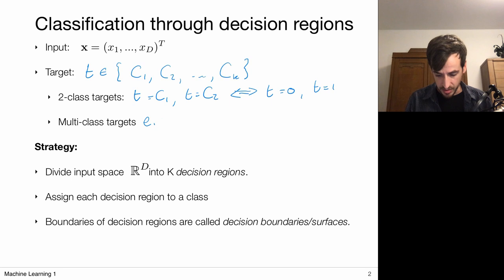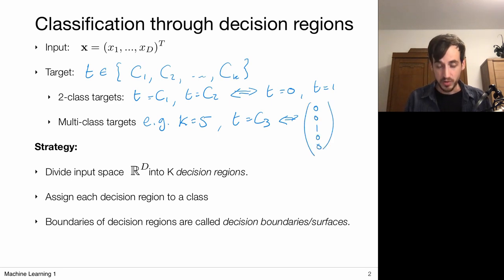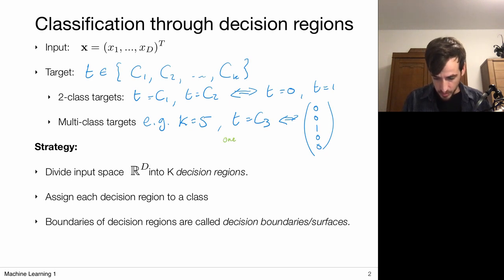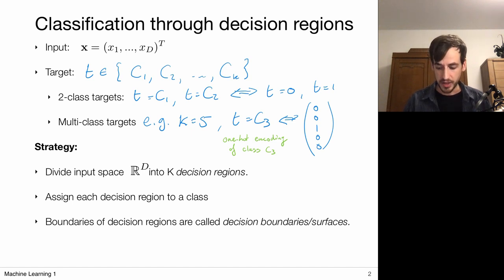In the multi-class case, let's consider five different classes. Either we can say my target belongs to class three, or equivalently we can encode this via vectors using a one-hot encoding — a five-dimensional vector where only the third component takes on the value one. This is what we call a one-hot encoding of class C3. This will later make it more practical to work in multi-class cases, since we have a numerical vector to compute with rather than abstract labels.